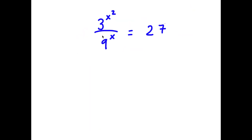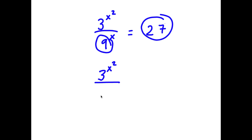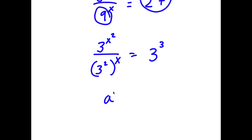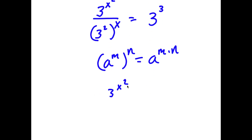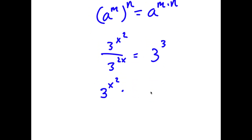In this problem, I have 3 to the power of x squared over 9 to the power of x is equal to 27. I'm first going to rewrite 9 as 3 squared and 27 as 3 cubed. So now I have 3 to the power of x squared over 3 squared to the power of x, equal to 3 to the power of 3. Using the rule a to the power of m to the power of n equals a to the power of m times n, 3 squared to the power of x becomes 3 to the power of 2x. So this equals 3 to the power of 3.